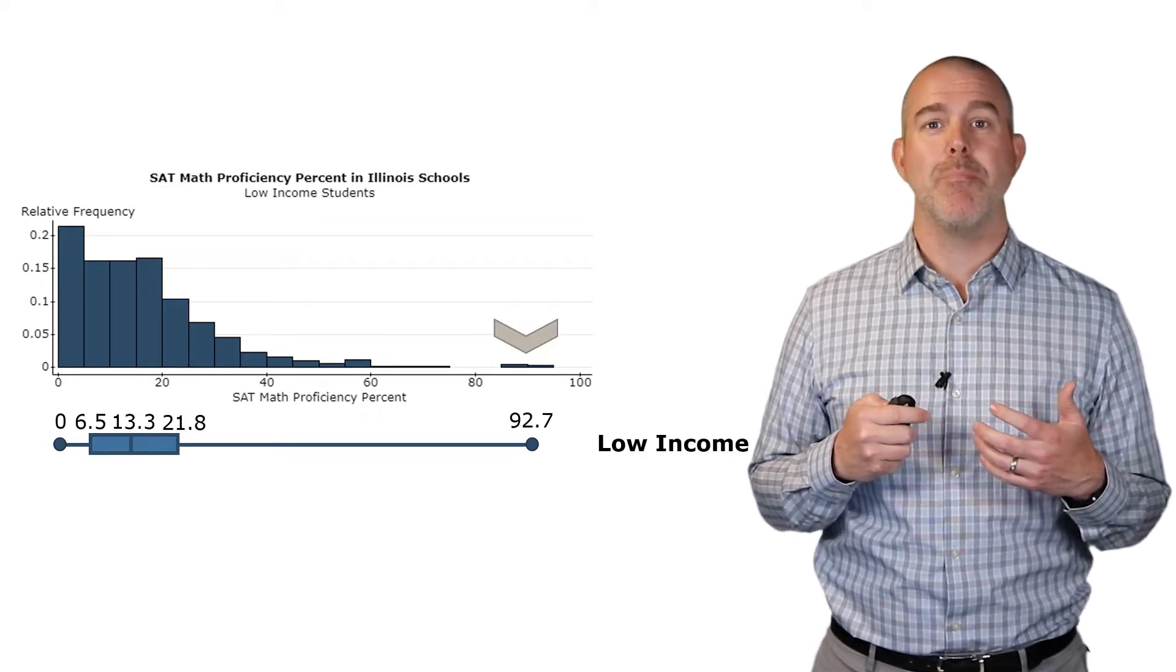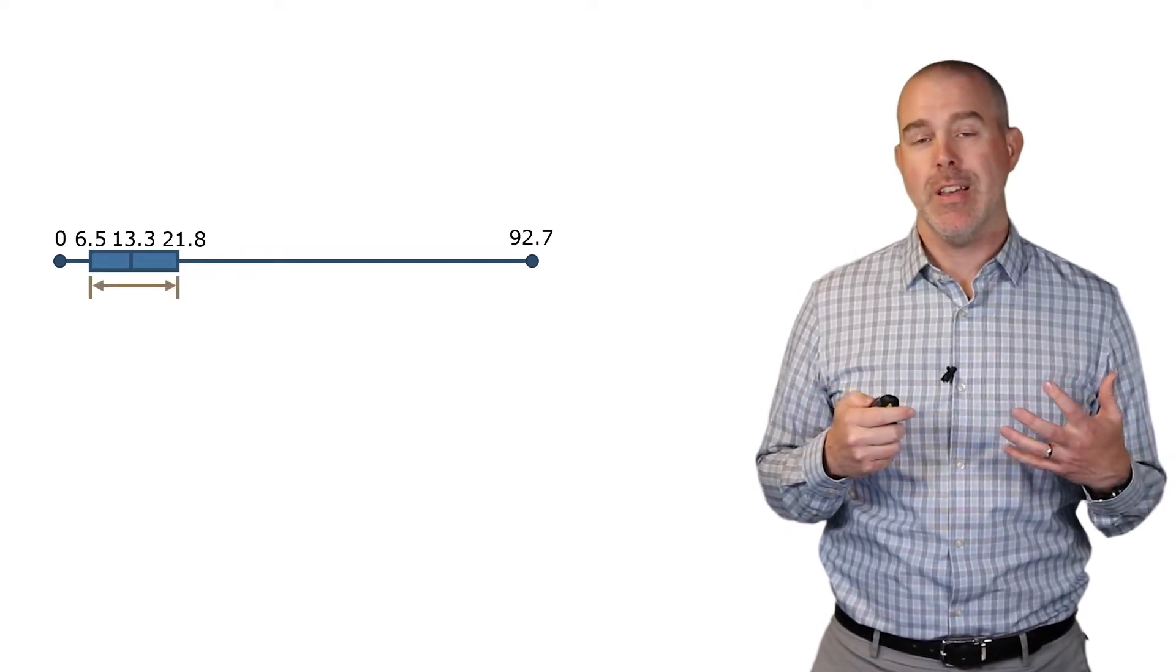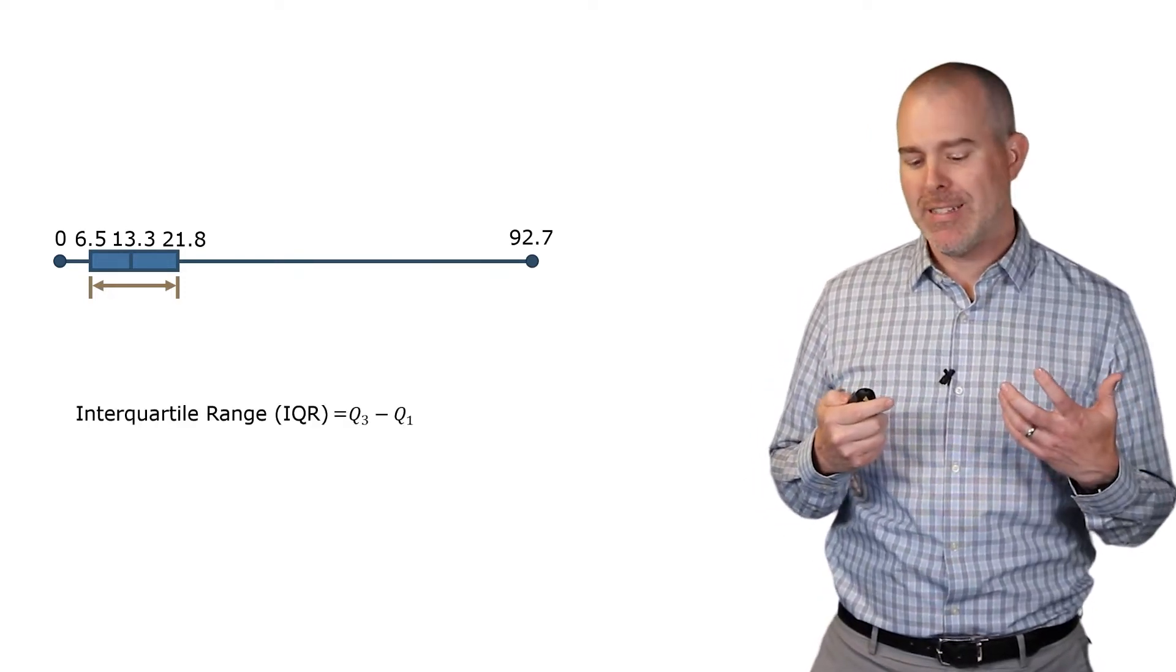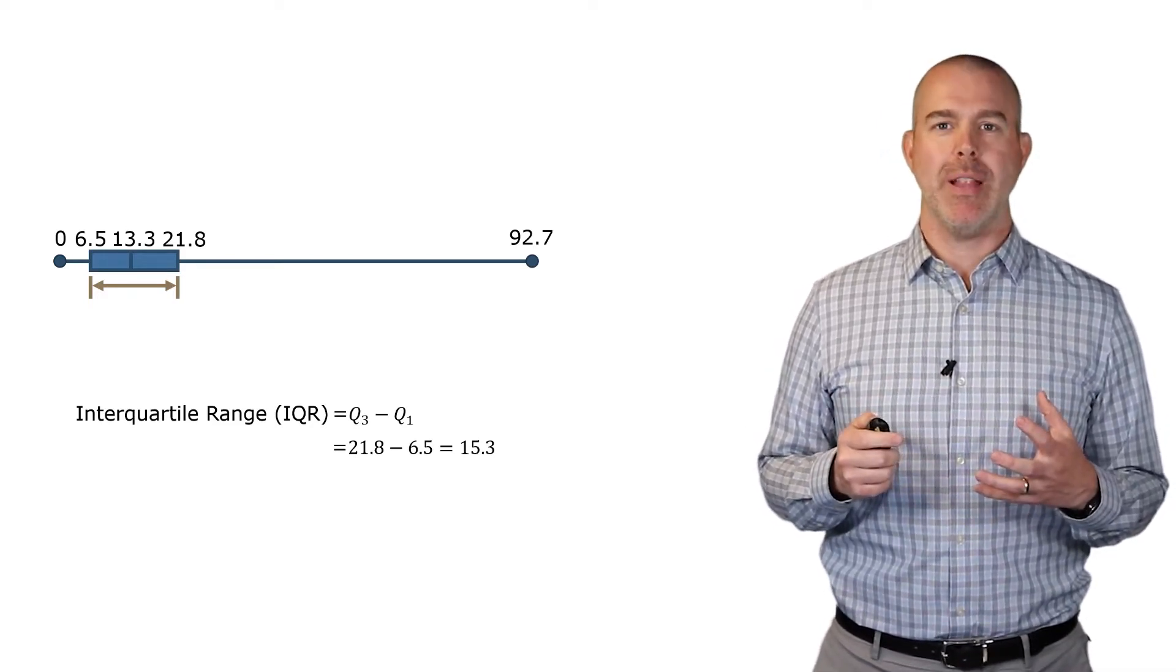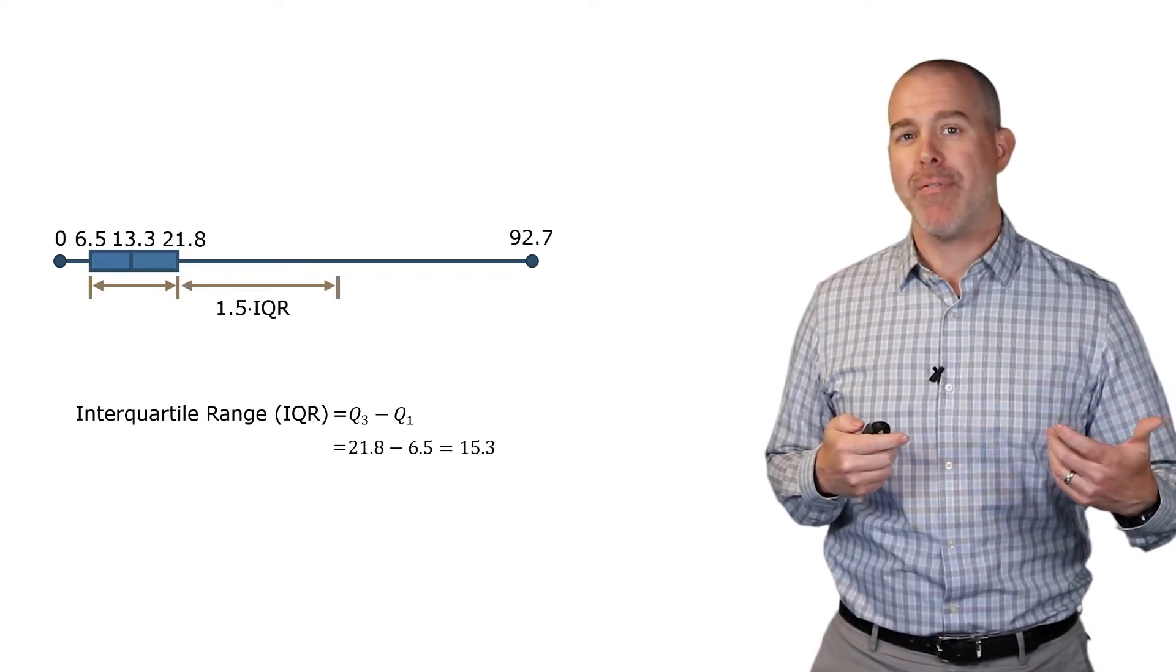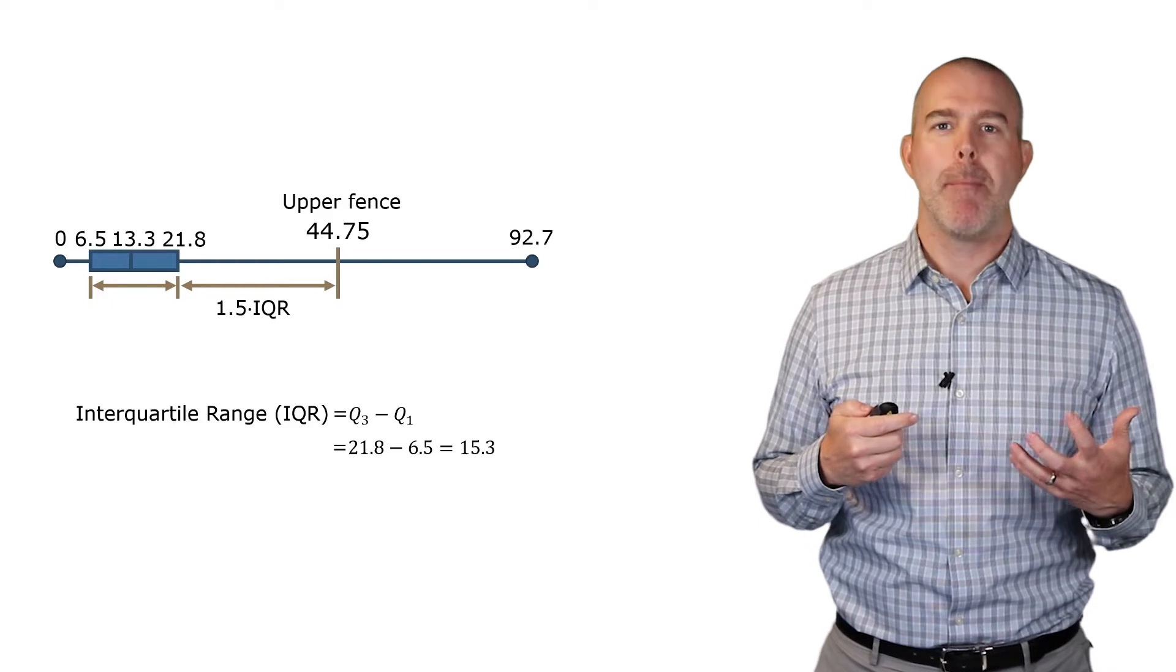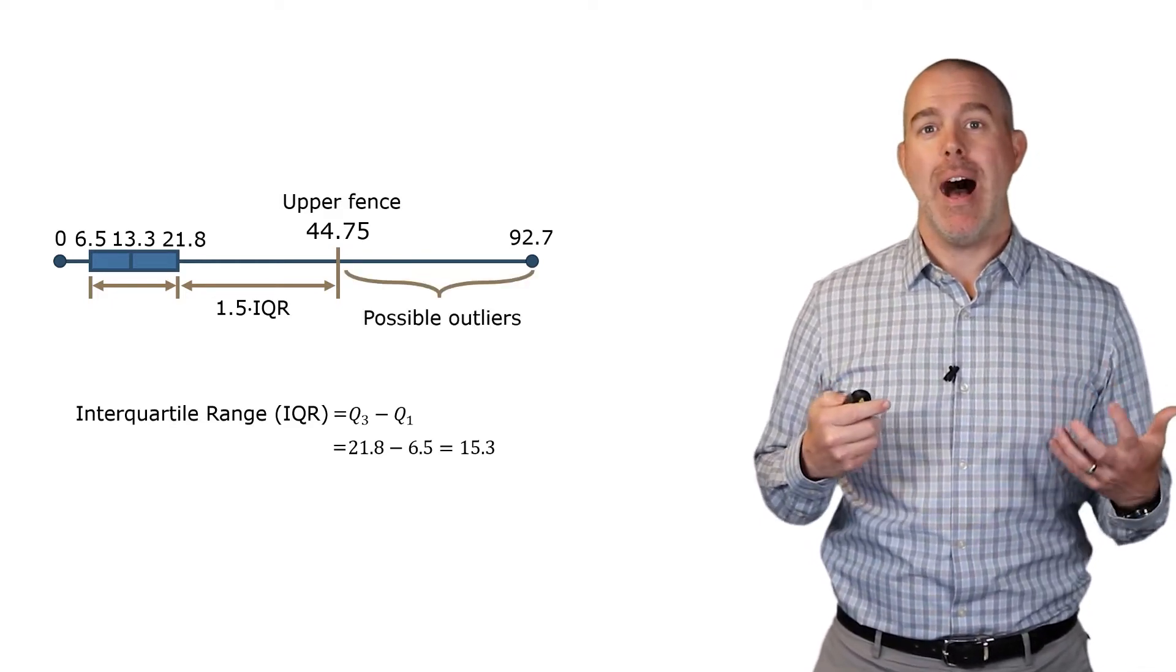Let's focus on this box plot and dive deeper into how we can identify those possible outliers. If we look at the difference between the third quartile and the first quartile, we'll call that the interquartile range. In our case, it is 15.3. One common way to identify possible outliers is to take the upper quartile, Q3, and add one and a half of these interquartile ranges. That puts us at 44.75. We call that the upper fence, sometimes called the upper boundary. Anything above that becomes a possible outlier.